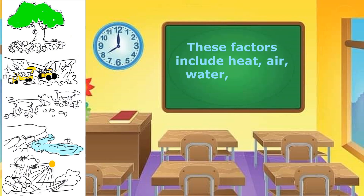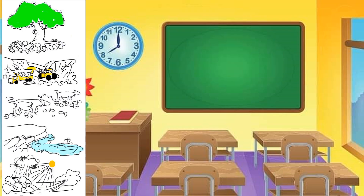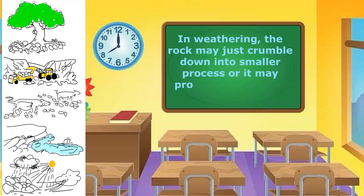These factors include heat, air, water, plants, animals, and men. In weathering, the rock may just crumble down into smaller pieces or it may produce some other new substances.